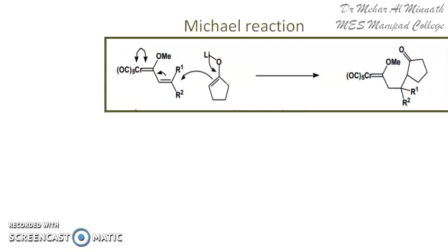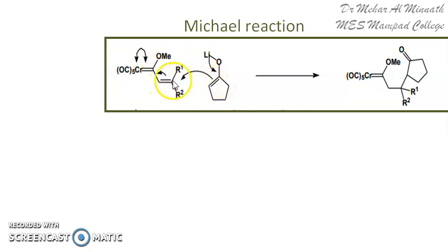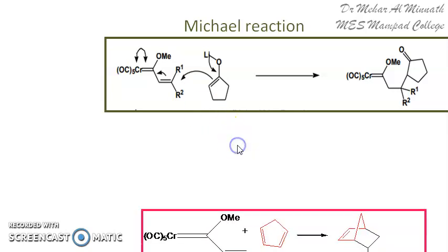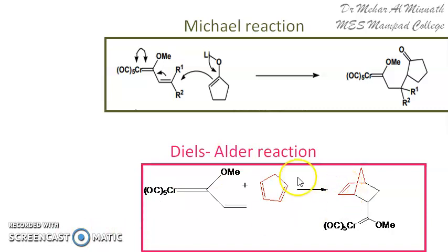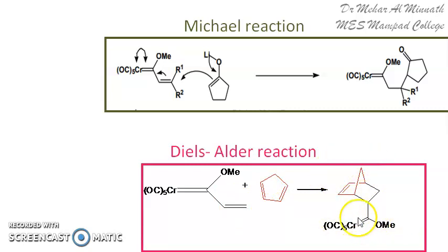Coming to another reaction — the Michael-type reaction. It is to the adjacent double-bonded carbon, not the carbene carbon itself, that addition occurs, and there is an electron transfer causing a ring to attach to the compound — it is a Michael-type reaction. We can also have a Diels-Alder type reaction: a double-bonded group is attached to the carbonyl carbon, the diene gets attached to this double bond, and you get the Diels-Alder cycloaddition product.